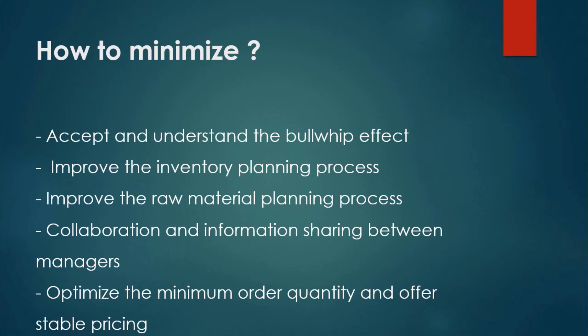Fourth is collaboration and information sharing between managers. There may be inter-conflicting targets between purchasing manager, production manager, logistics manager, and sales manager. Giving more weight to common company objectives in performance evaluation will improve collaboration between different departments. Providing regular and structural inter-departmental meetings will improve information sharing and decision-making.